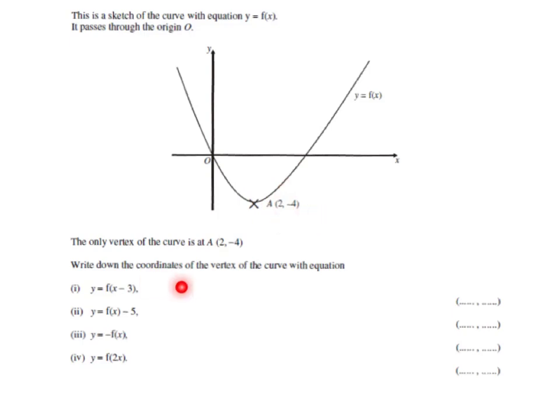We've got to write down the coordinates of the vertex of the equation after four separate transformations, so four separate answers. We really need to know the impact of these transformations on the curve and how it affects the vertex.